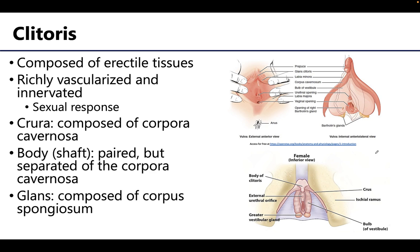The clitoris is an erectile structure, meaning it is composed of erectile tissues, and like all erectile tissues the clitoris is richly vascularized as well as richly innervated. It is a sexual organ that responds to arousal and stimulation with increased blood flow into the sinuses within the erectile tissues, leading to compression of the venous outflow channels. There are three major parts of the clitoris. The crura are composed of the corpora cavernosa, attaching to the ischiopubic rami on either side, and are covered superficially by the ischiocavernosus muscles.